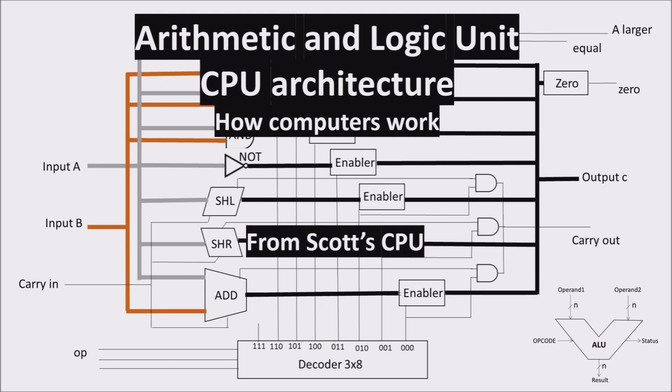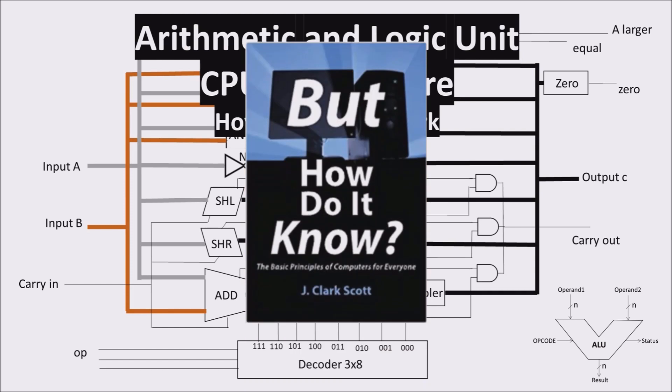This particular ALU is taken from the book But How Do It Know? by J. Clark Scott, which is a perfect guide to understand computers. So, with John's permission, we can start the analysis.